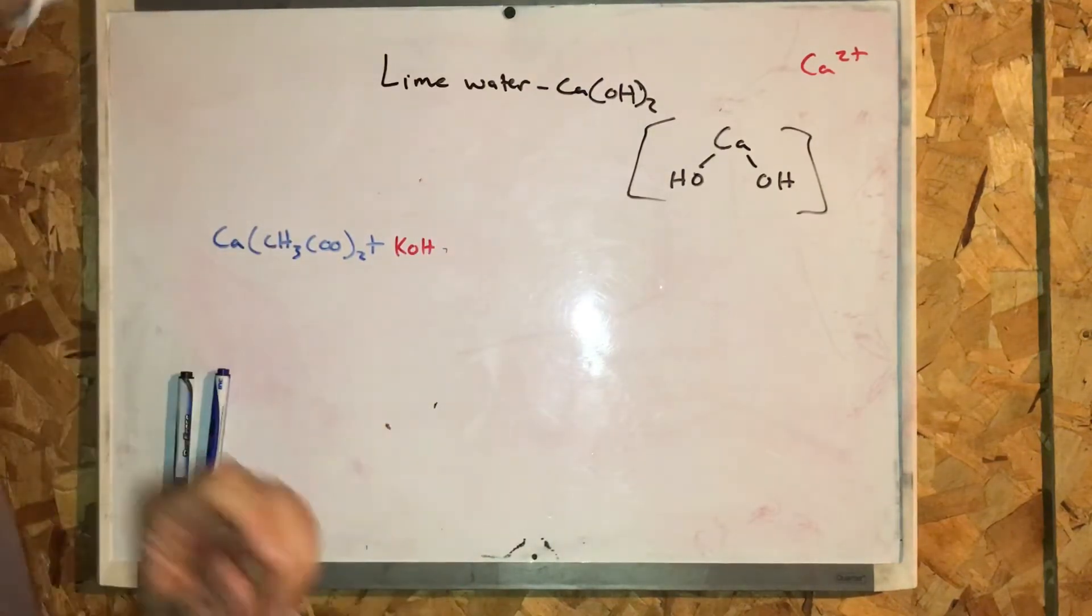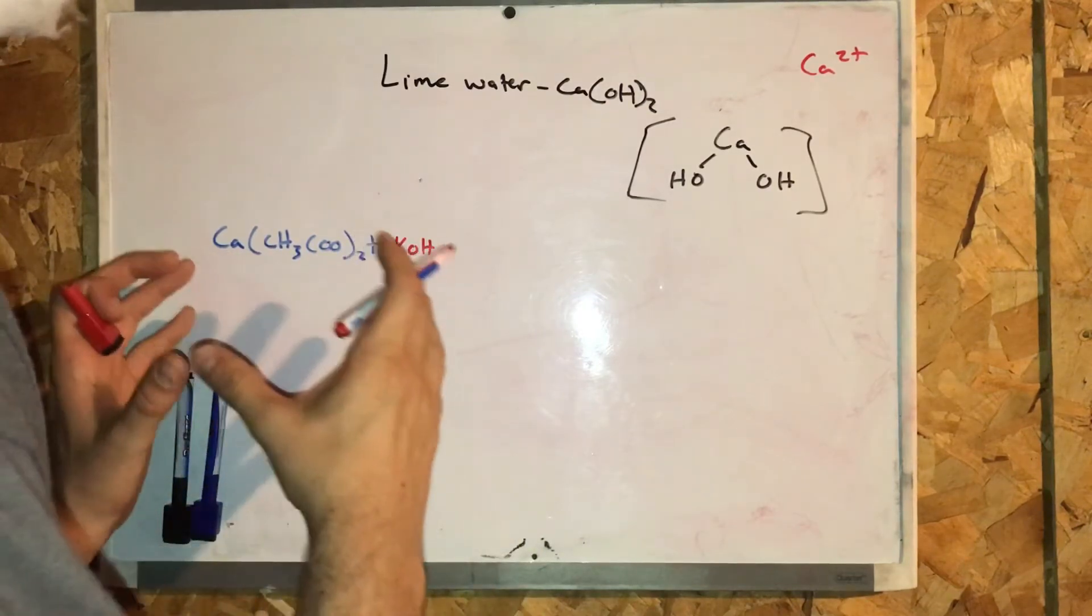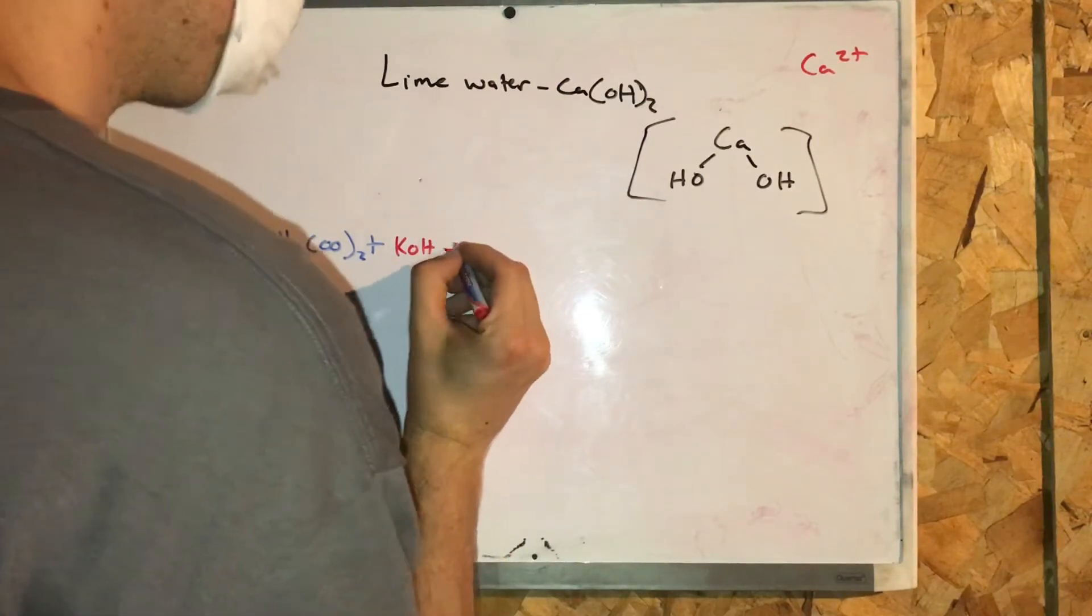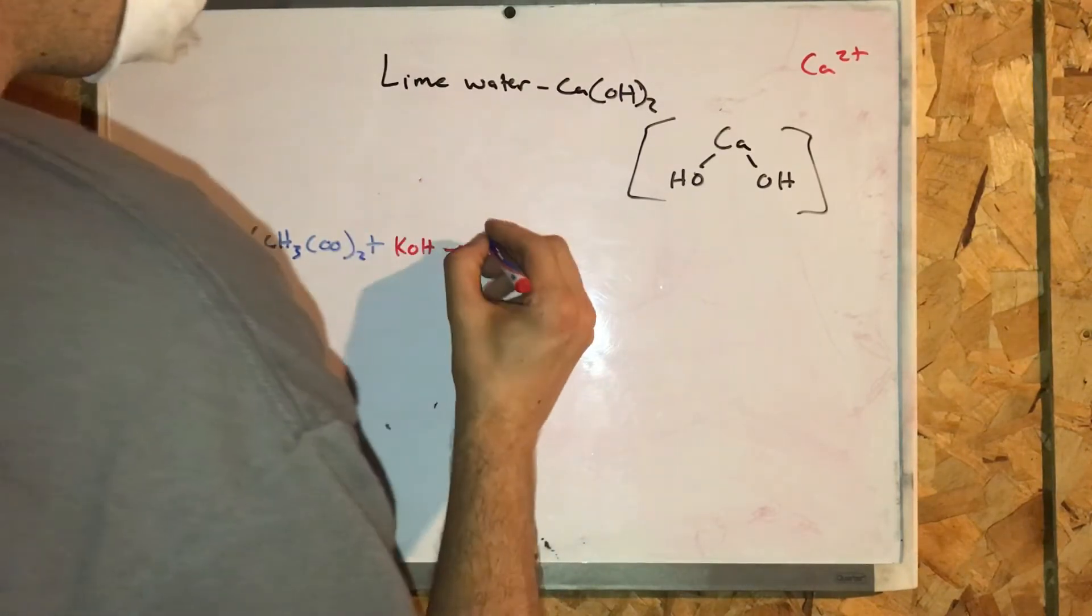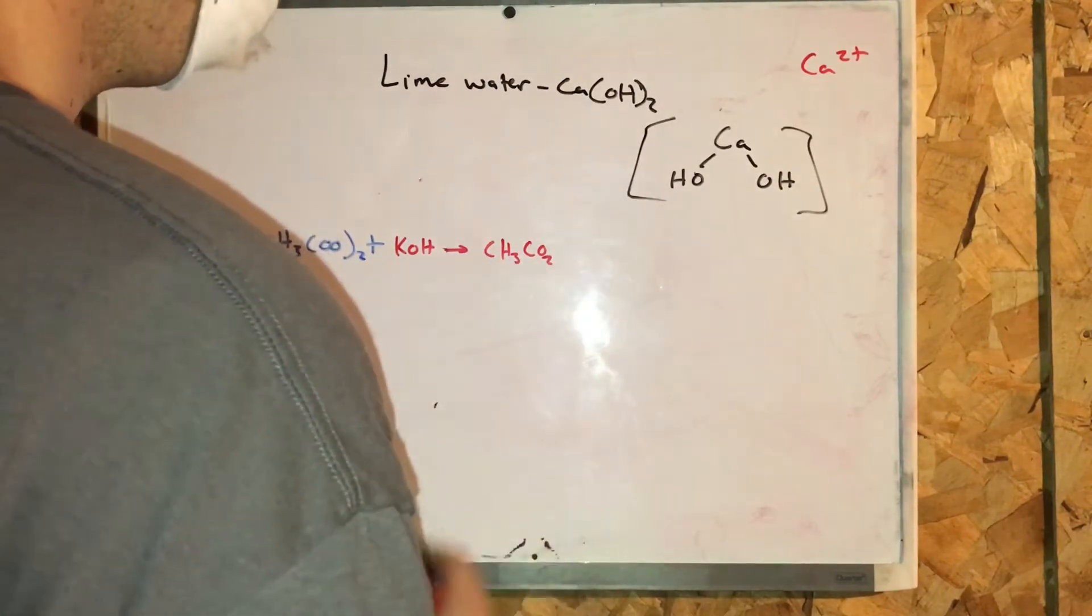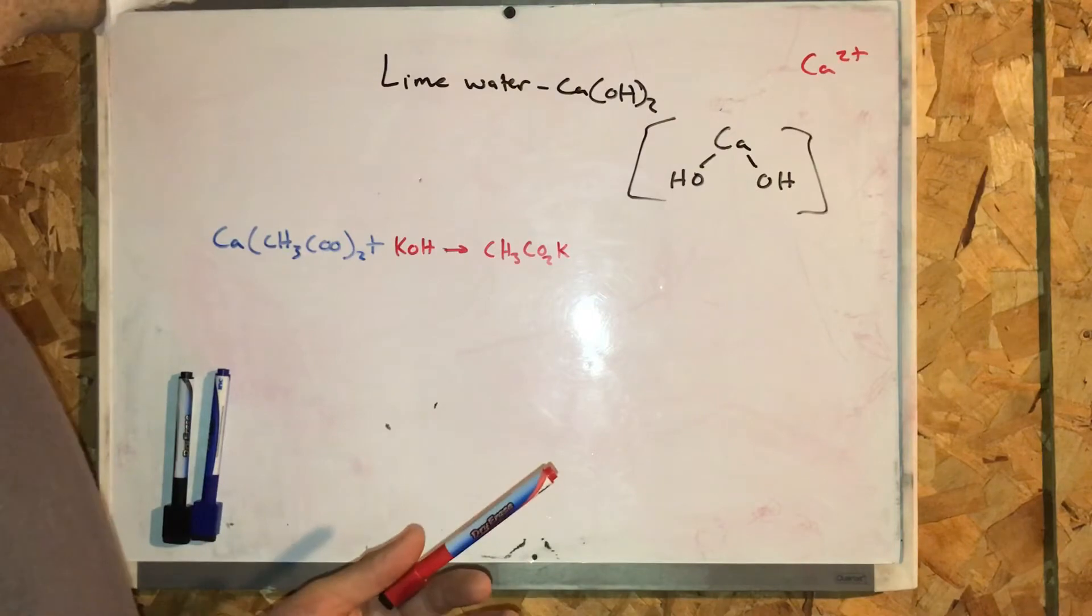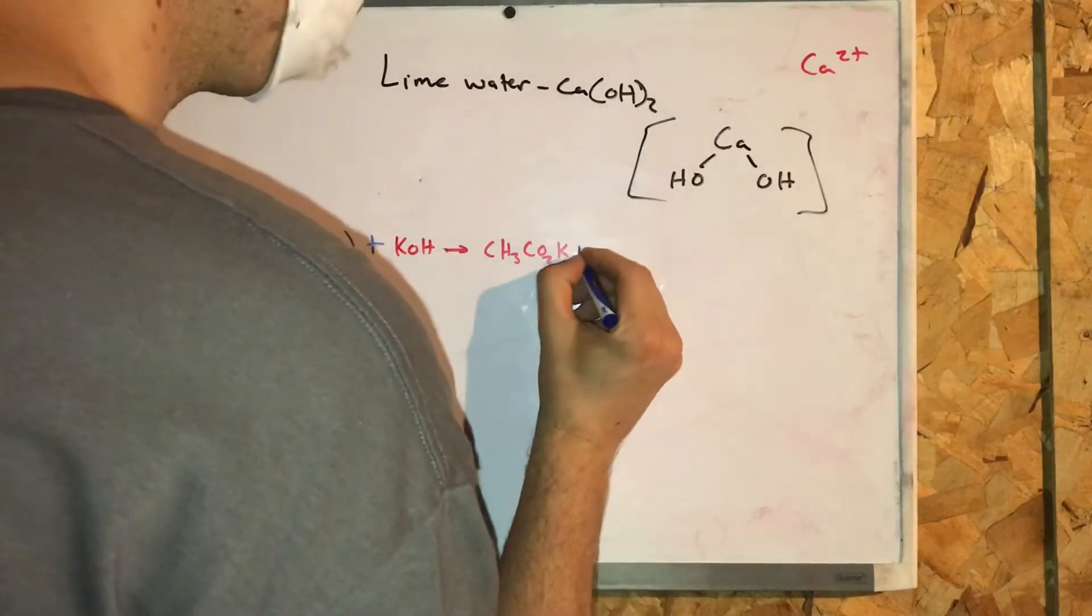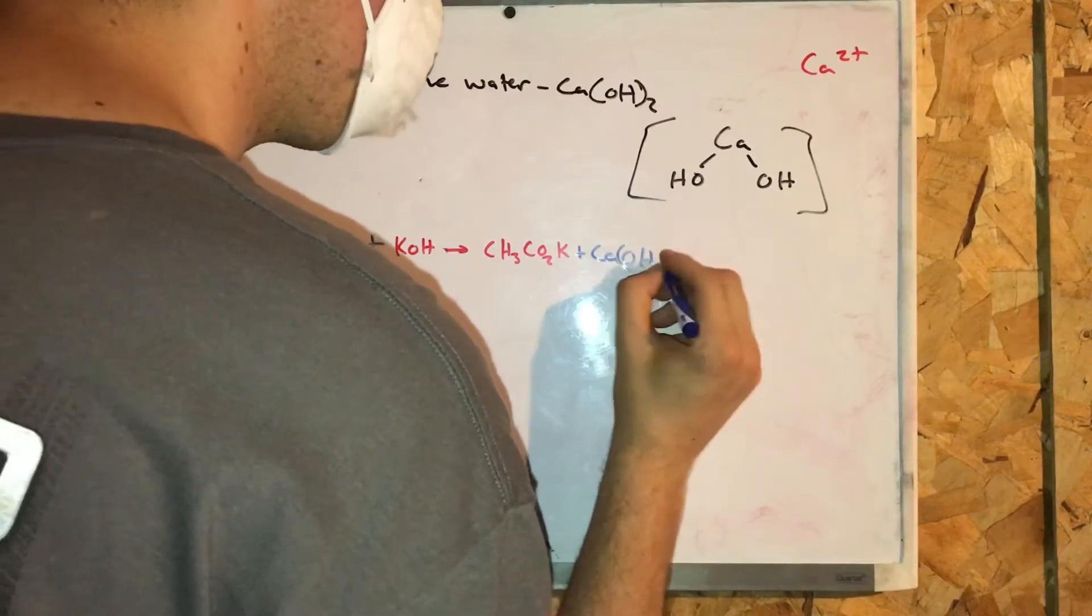which stands for potassium hydroxide. Now potassium hydroxide, when bonded, when these two molecules bond, it's going to yield interesting products. So the first product is what is known as CH3CO2K. Okay, so that is potassium acetate. But this video is not focused on creating potassium acetate. We want to create something called calcium hydroxide. And that is our final product here.